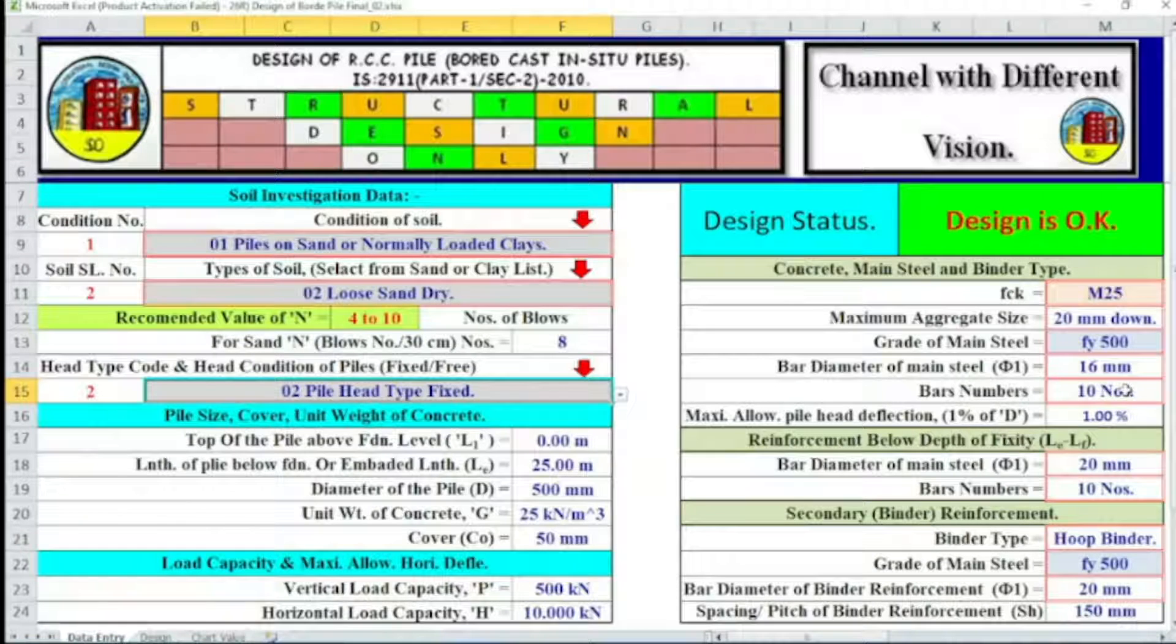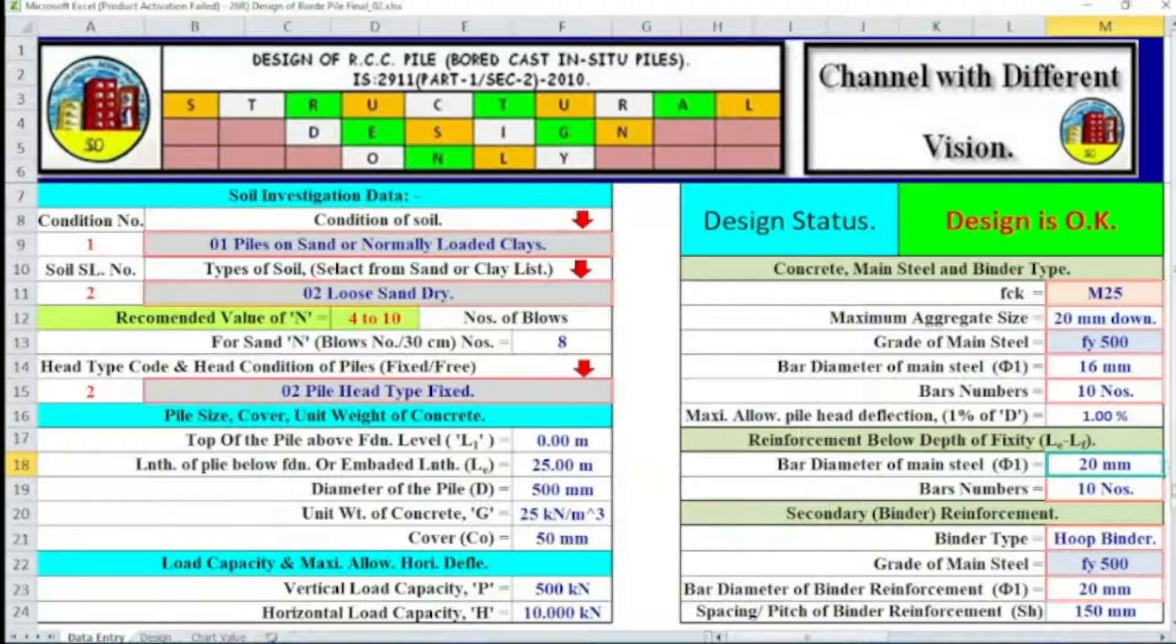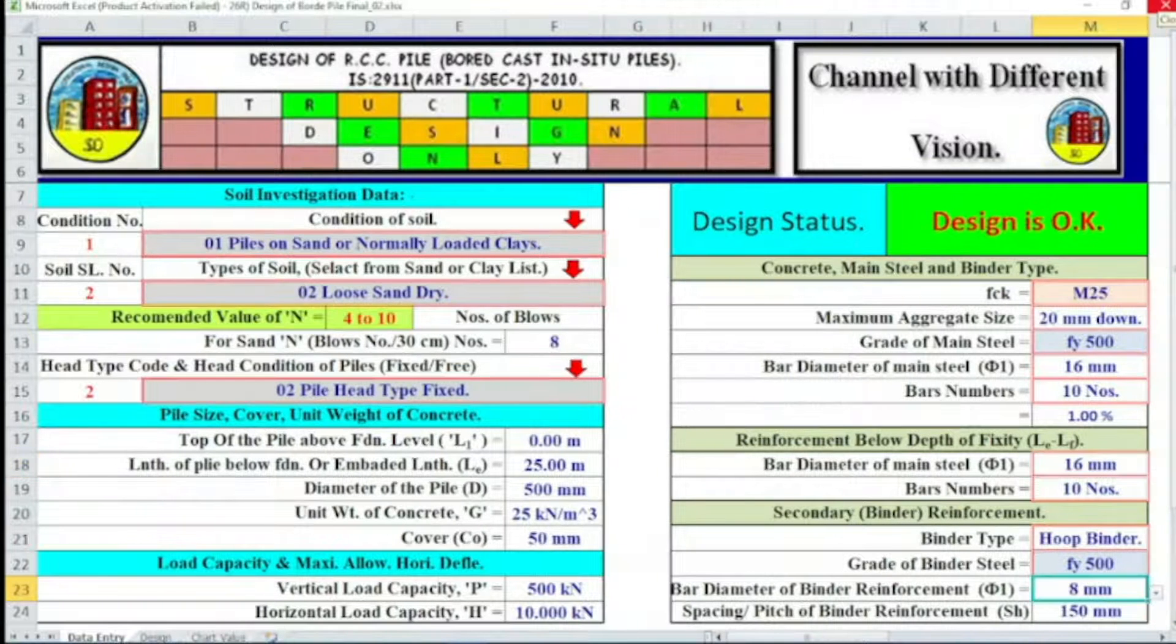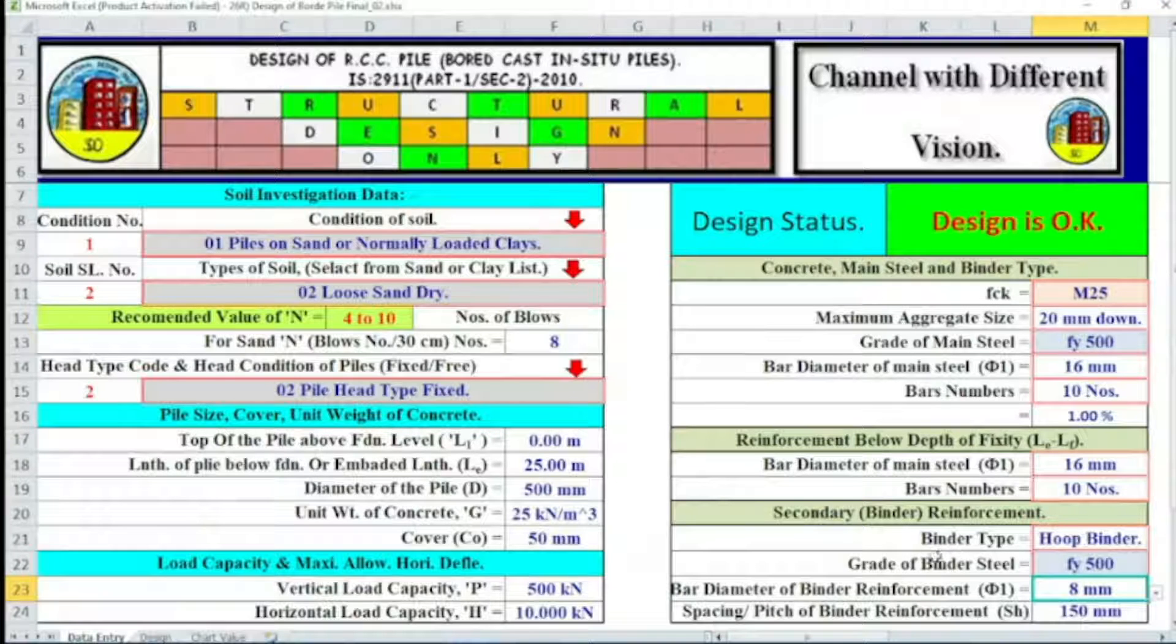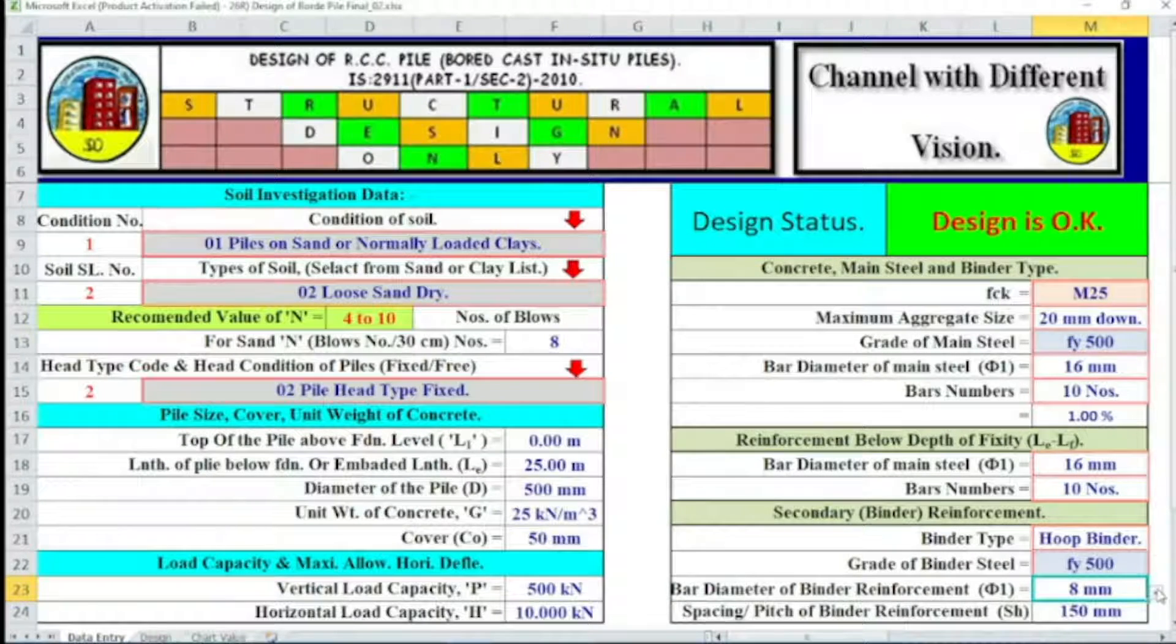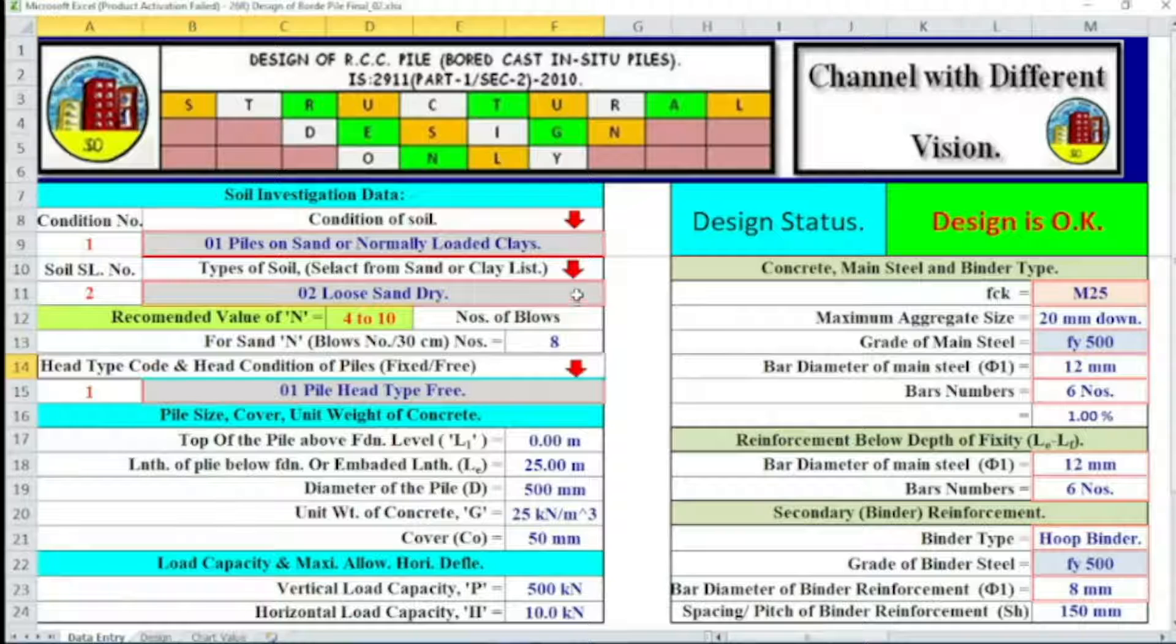Bar diameter of main steel 16 mm, number of bar 10. Maximum allowable pile head deflection 1%, we have considered. Reinforcement below the depth of 6 feet, say main dia 20 mm, we can change it also. Say 16 mm, number of bar 10. Secondary reinforcement binder type, grade of binder steel fy 500, bar diameter of binder reinforcement 8, you can change here. Spacing of binder reinforcement 100.